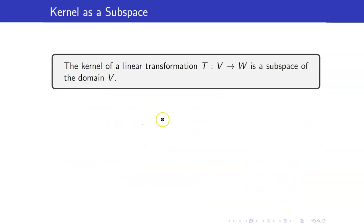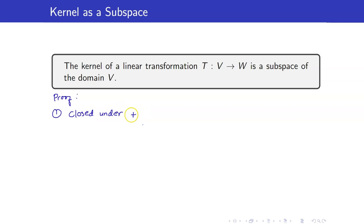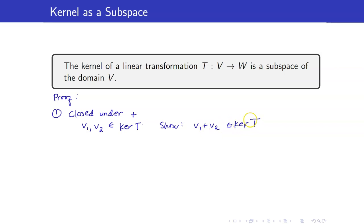Here is an important theorem: the kernel of any linear transformation is always a subspace of the domain V. In our previous examples, we showed the kernel of T is the span of certain vectors, and therefore it is a subspace. To prove this, we use the subspace test — we must show the kernel is closed under vector addition and scalar multiplication. So if V1 and V2 are in the kernel of T, we want to show their sum is also in the kernel of T.